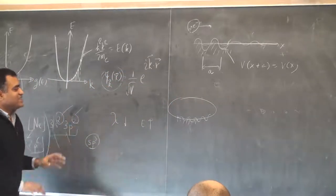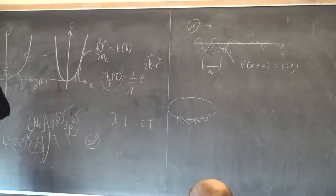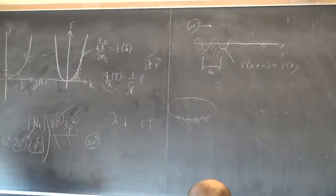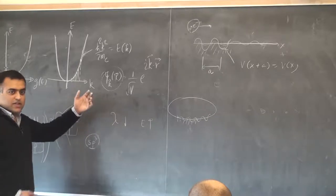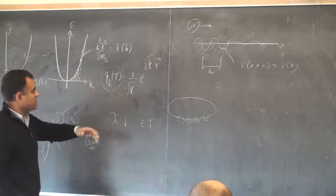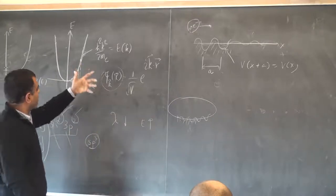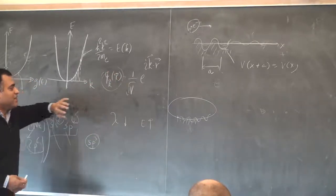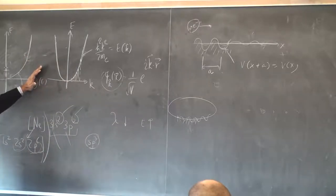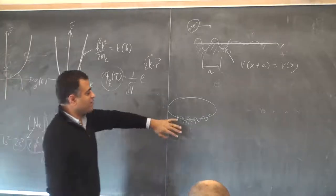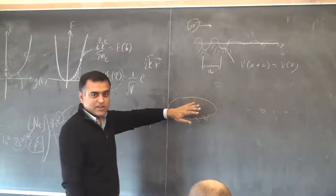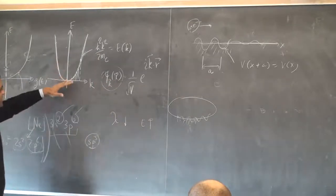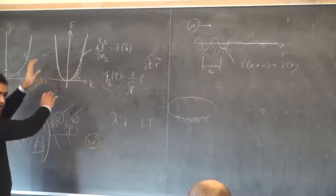This is the heart of all condensed matter physics — putting a periodic potential in the path of an electron in a crystal and asking what happens to all its physical properties: electronic conductivity, current-carrying capability, heat capacity. All of them will be answered once we find the energy dispersion and wave functions. What are its photonic and thermal properties? All are buried in this question. People have spent a great deal of time finding ways to solve this problem as accurately as possible.